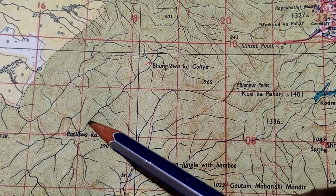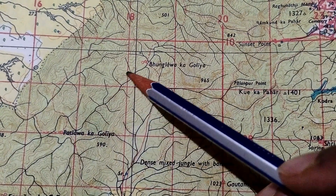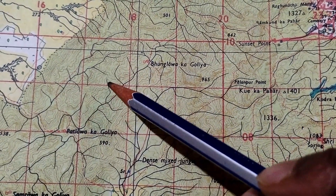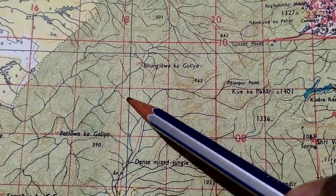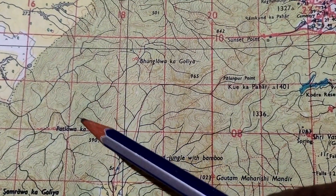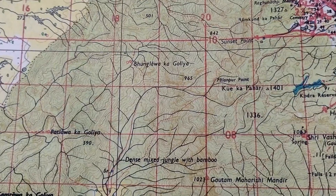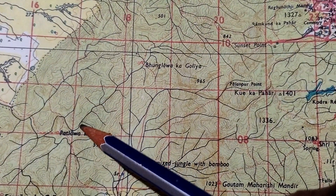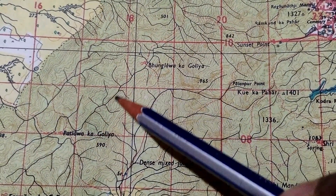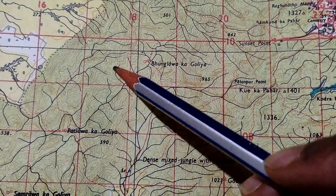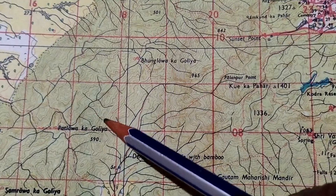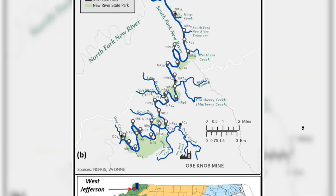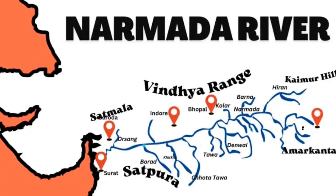In a trellis pattern, the tributaries join the main river at right angles. If small streams join the main stream at right angles, that is the best example of a trellis pattern. The main examples are the Appalachian River and the Narmada River.